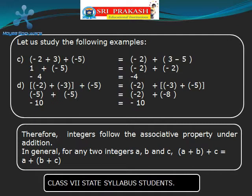Now let us take another set of numbers: minus 2 and minus 3 as a group first. When we add minus 2 and minus 5 and further add minus 5, the answer will be minus 10. Now let us take minus 3 and minus 5 as a group and add minus 2. The integers follow the Associative Property under addition.